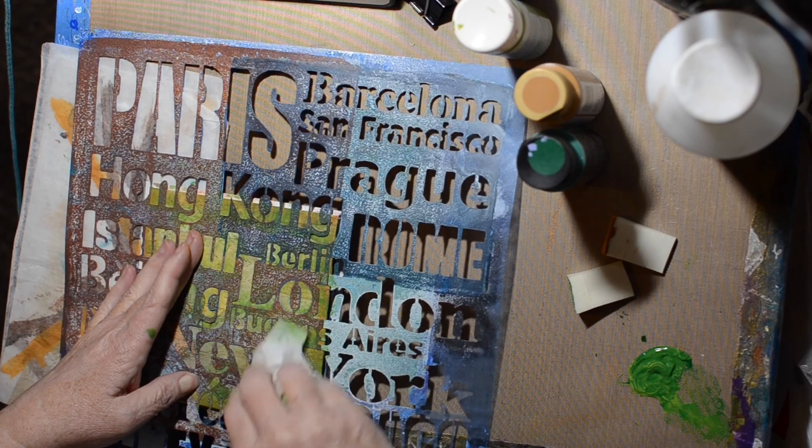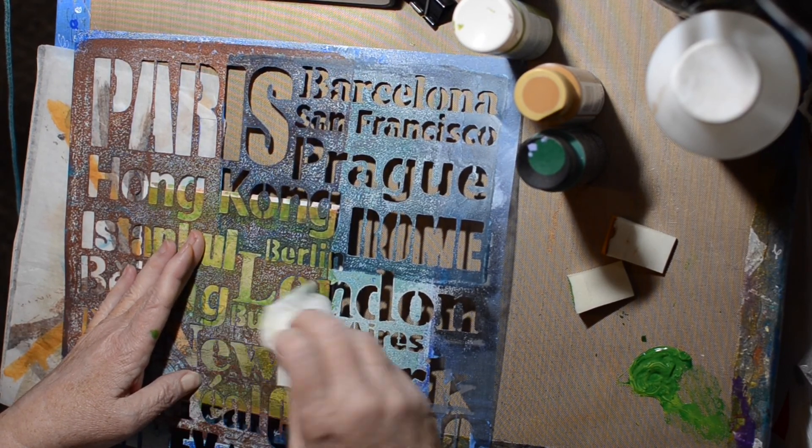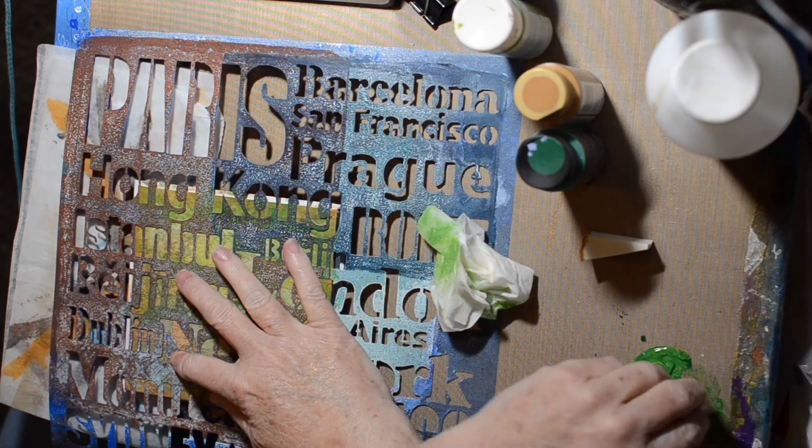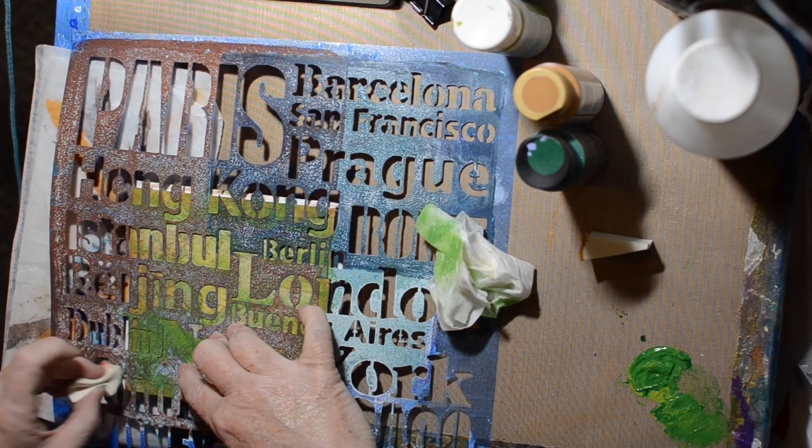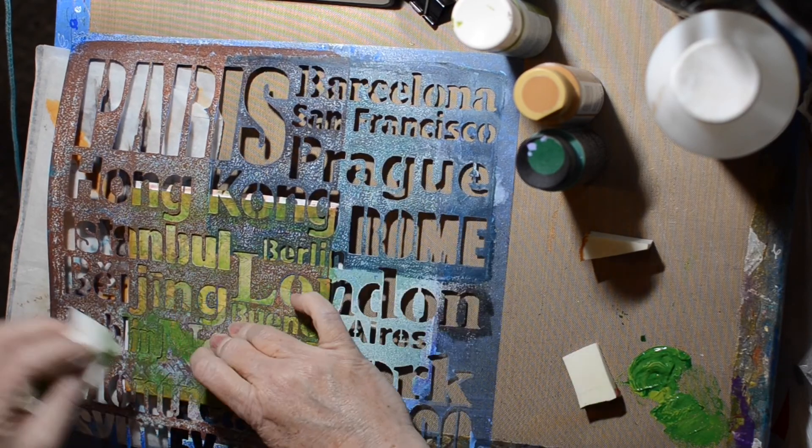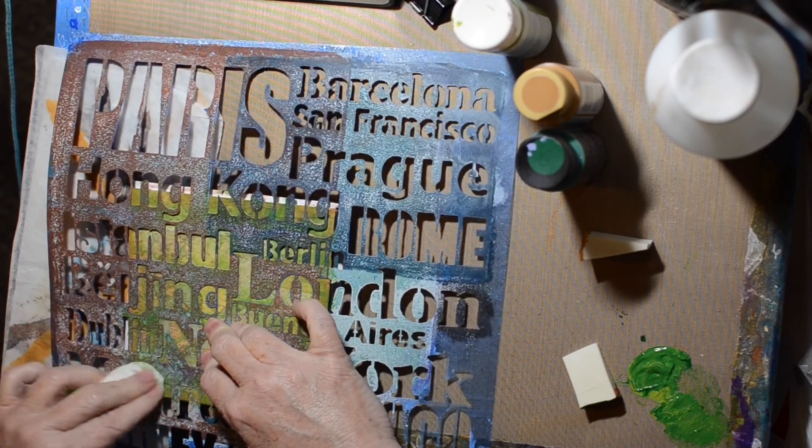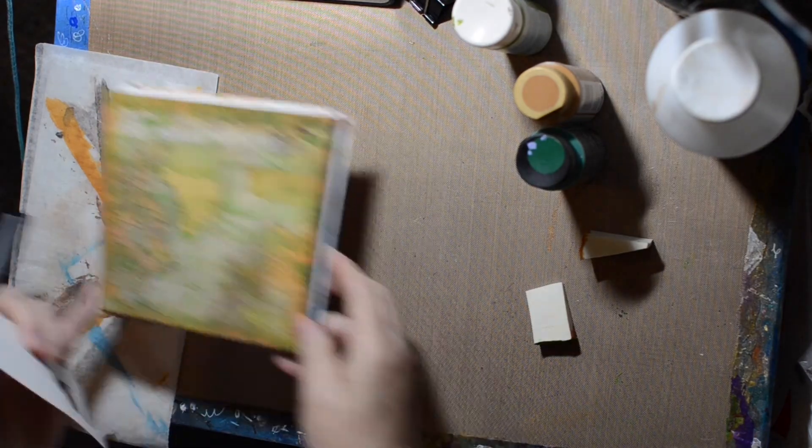And I'm just stenciling and then rubbing out a little bit, like I said, so that it will be sort of a shadow effect. And trying to hold it in one place and do it is tricky, especially when it's on a book and it's got that fold. So there it is. See, it's just real faint.